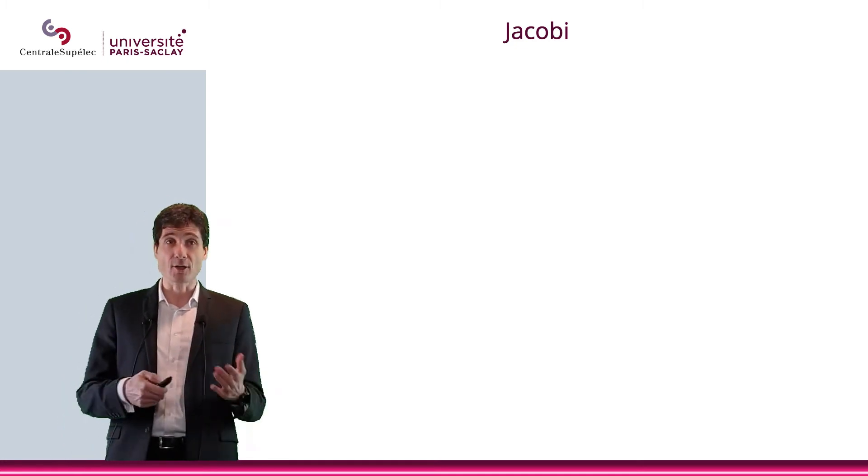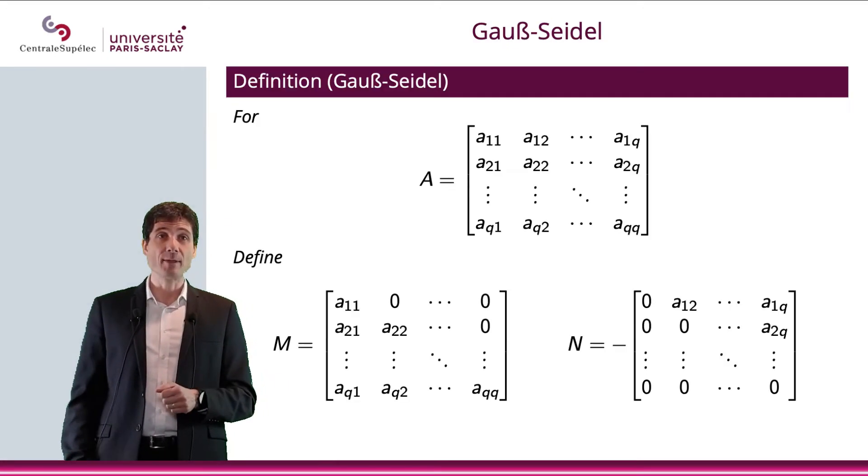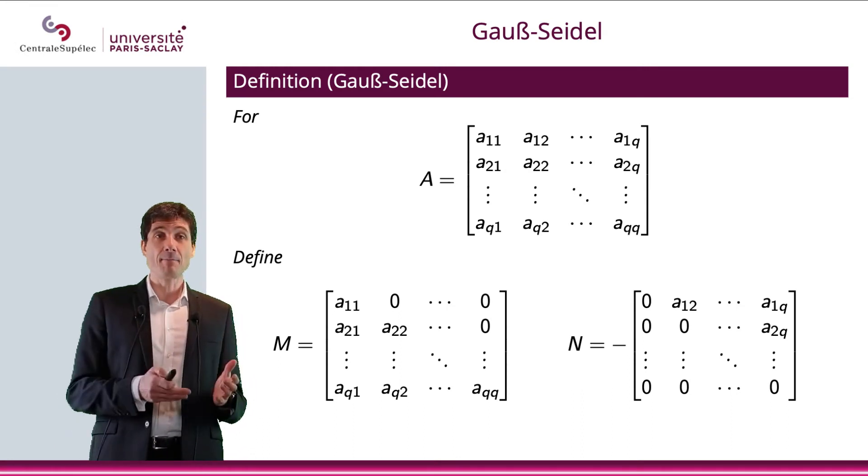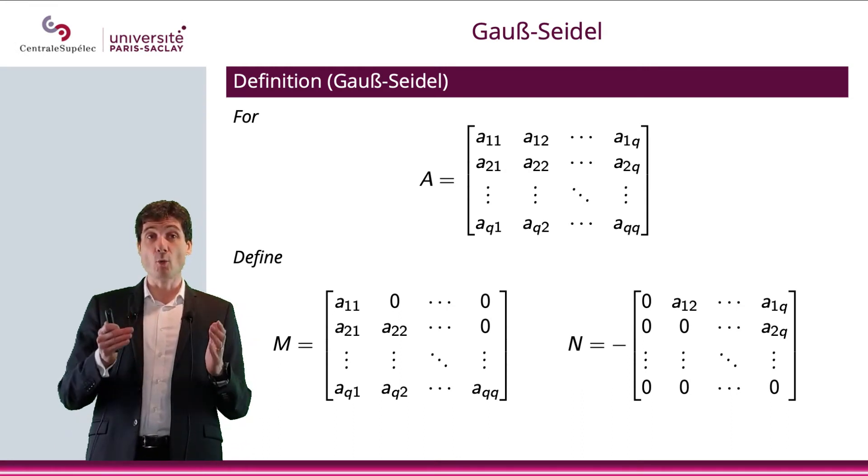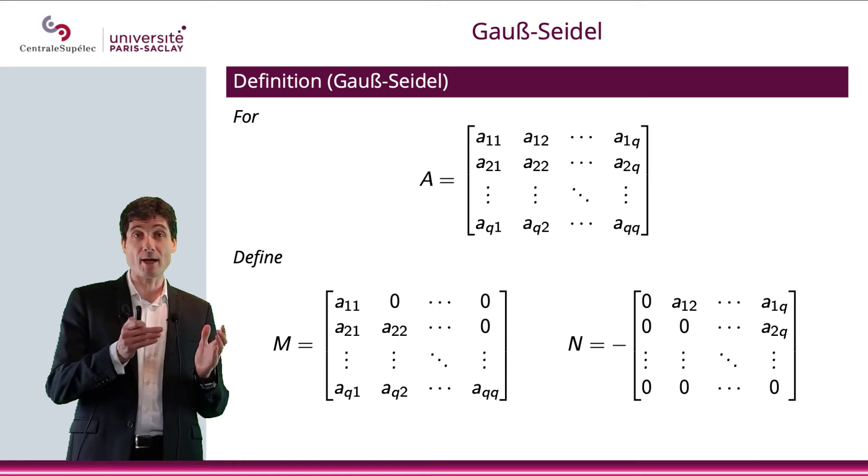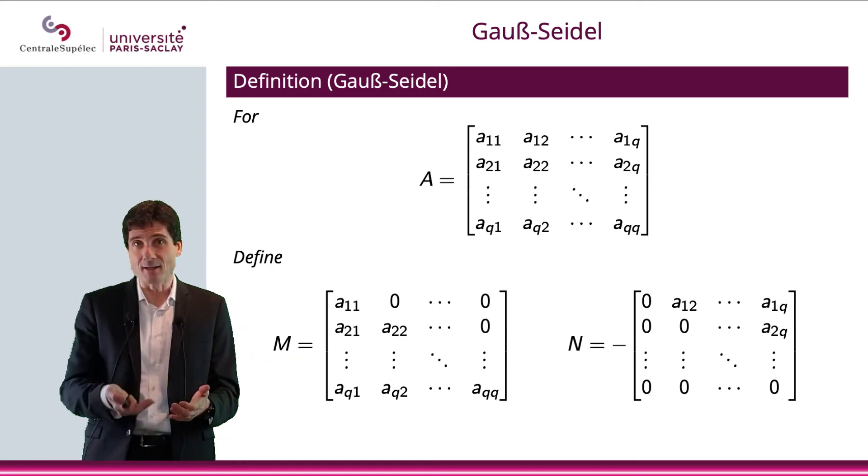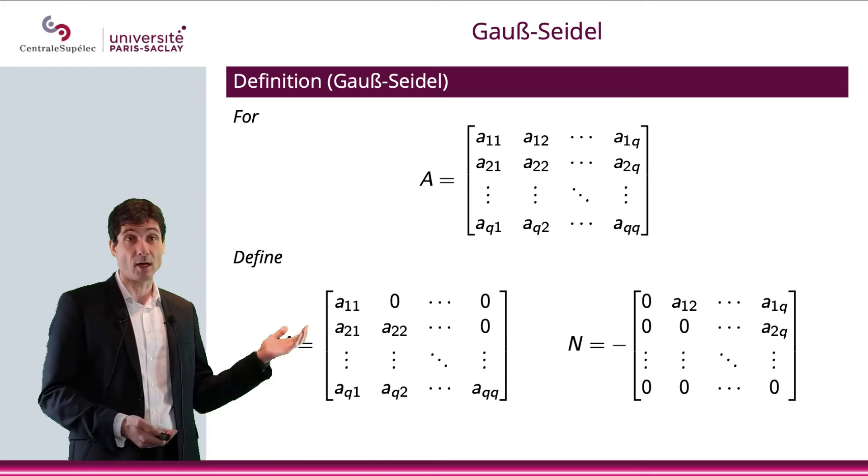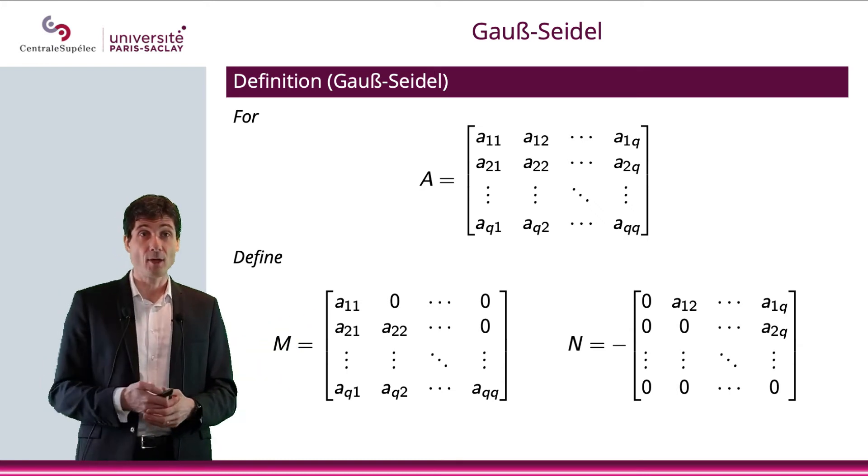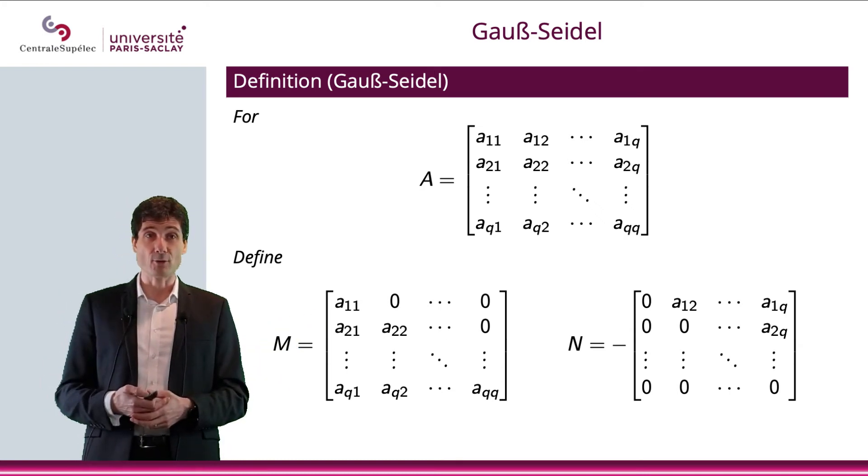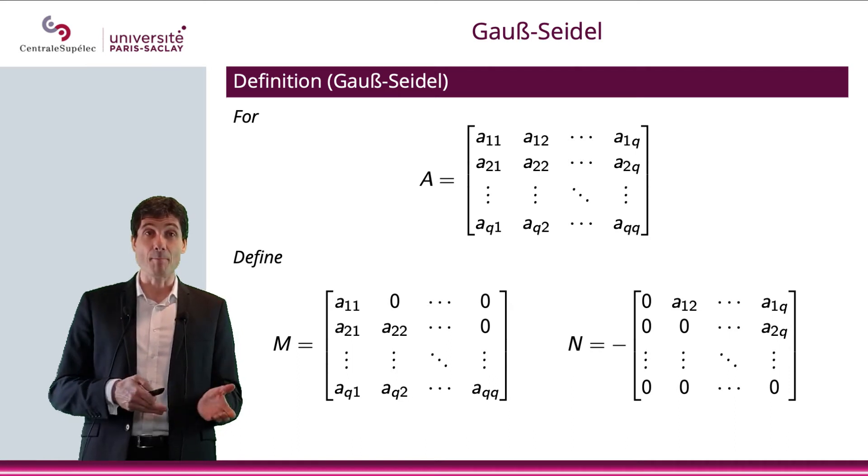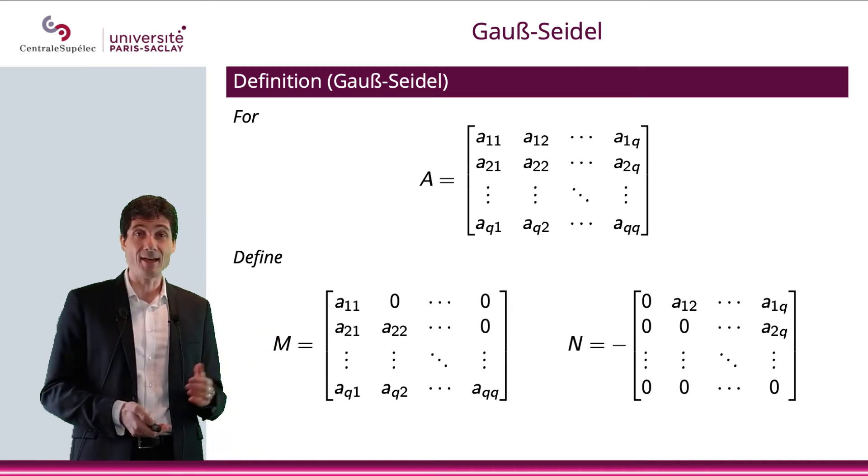Let me make another choice of M and N, and that will be Gauss-Seidel. M will be the lower terms, the lower triangular terms of A, and N will be minus, well, obviously, whatever, you know, remains, the upper part of the matrix. So, indeed, M minus N is equal to A.